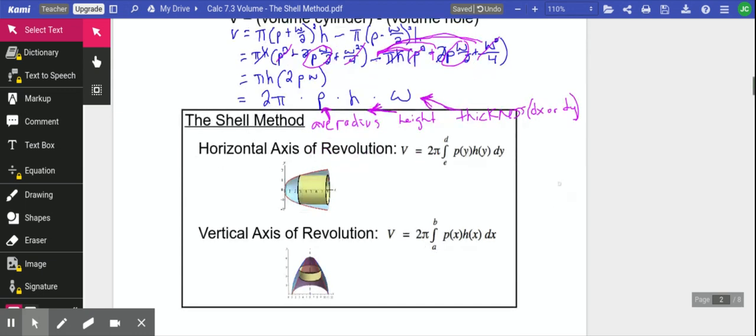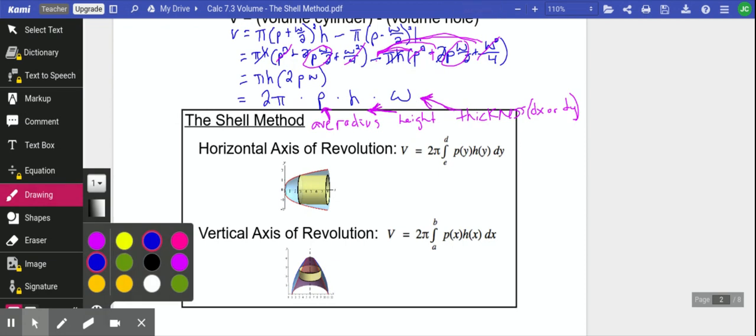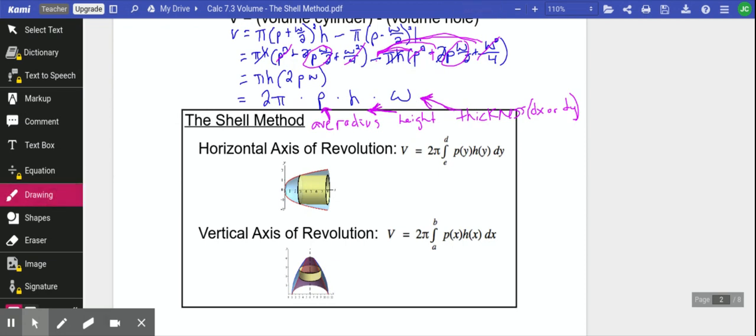The stuff in the box here, that's what you want to put in your notes. To find the volume of a solid using the shell method, we've got this 2π and then an integral of P(Y), H(Y) times DY. And what those pieces mean, you're always going to have that 2π out front. P(Y) is a function of the radius. H(Y) is the function that gives the height. And then the DY or the DX is that thickness. So it's exactly what we had up at the top.